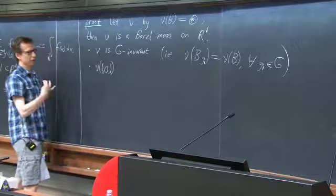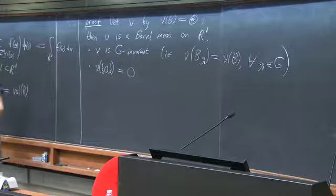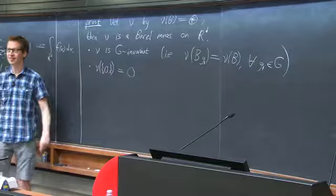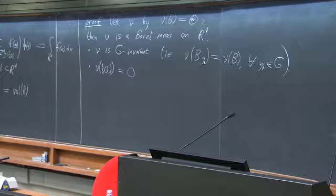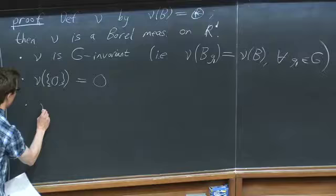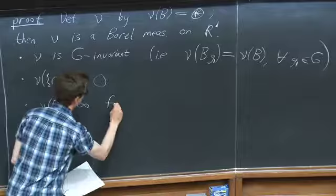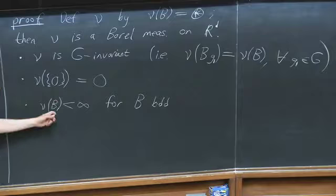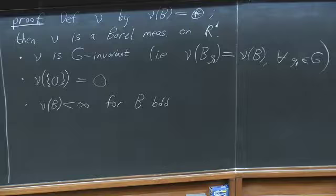Another important property is that ν({0}) = 0. Having established this, one knows that ν must be Lebesgue measure times a constant. But there is one more problem: this constant could be infinite. We must also show that ν(B) is finite for any bounded B—that is, for any B whose closure is compact, contained in some ball. That is the technically hardest part of the proof.